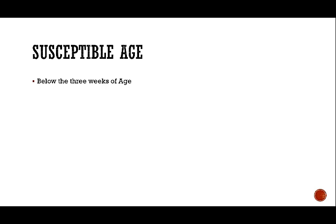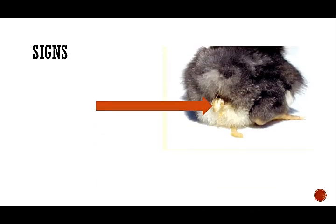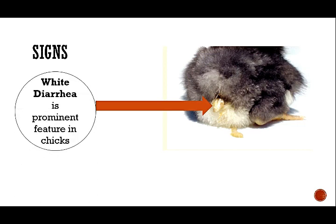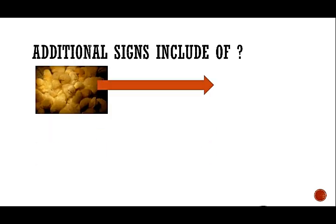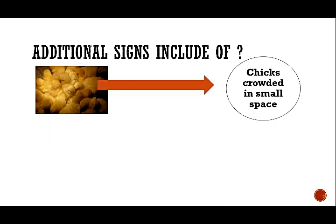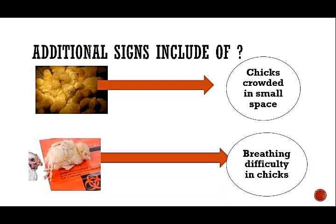The susceptible age is below three weeks, and peak mortality occurs at two to three weeks of age. The signs associated with this disease are quite distinctive. The first sign is white diarrhea in the young chicks. The vent is swollen. Additional signs include chicks crowding together in small spaces, breathing difficulty, and inflammation of the hind joints.